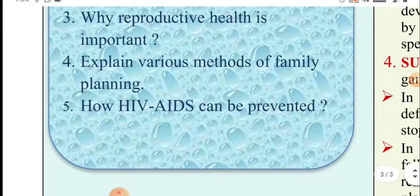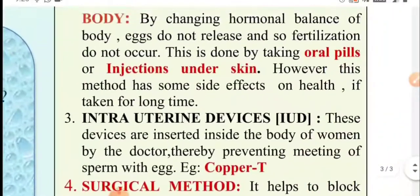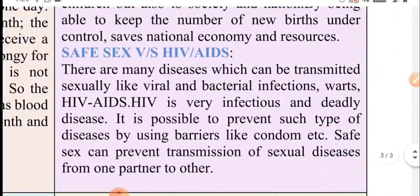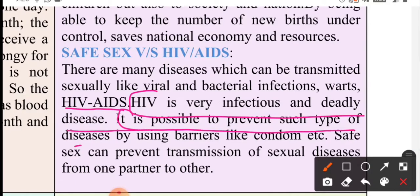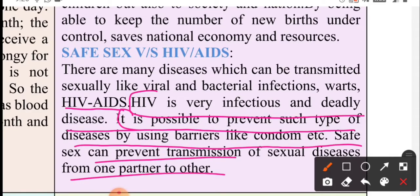Fifth question: how can HIV/AIDS be prevented? HIV is a very infectious and deadly disease. It is possible to prevent such type of disease by using barriers like condom. Safe sex can prevent transmission of sexual diseases from one partner to another.